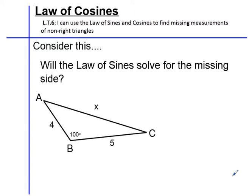In the last lesson, we used law of sines to solve for the missing angles and sides of triangles that weren't right triangles. If we take a look at this new situation, will the law of sines solve for the missing side, this x?